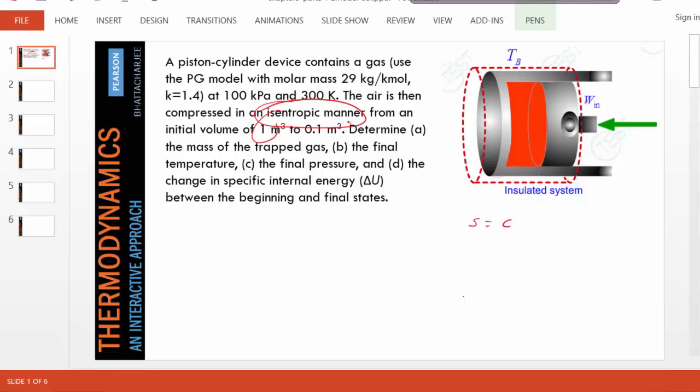Initial volume is given, final volume is given by a ratio of 10. The gas is being compressed. We have to determine the mass of the trapped gas, final temperature, etc.